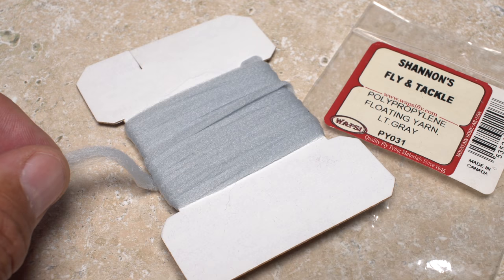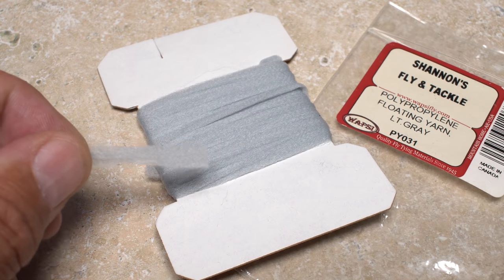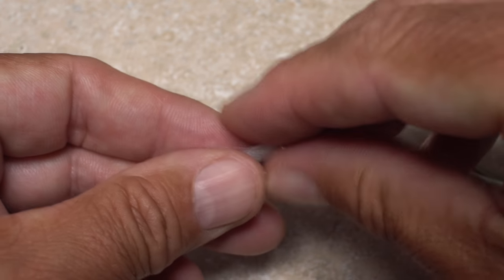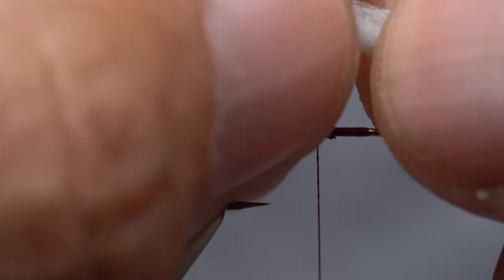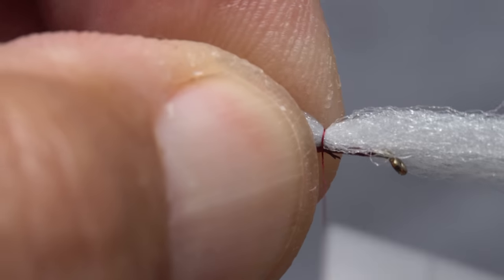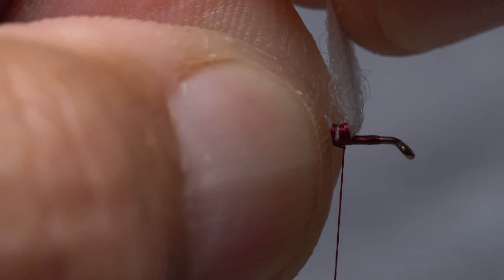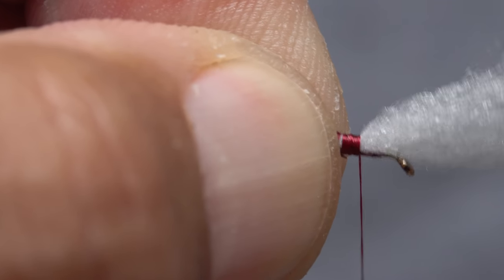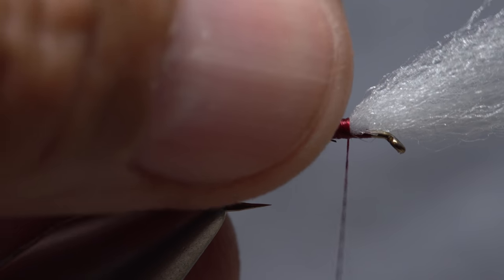Light gray polypropylene yarn is used for the wing or post of the fly. Snip a card width segment free and then snip that segment in half. This will be enough to make two flies. Take one of the segments and place it on top of the hook shank so the majority of it sticks out past the hook eye. Start taking wraps of tying thread to bind the yarn to the top of the shank. Keep wrapping forward and checking until the material is bound down all the way to two full eye lengths behind the hook eye.